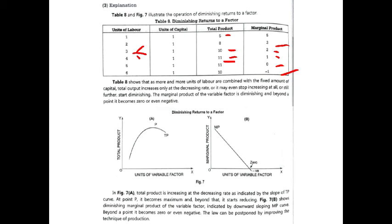That means when more and more units of labor are applied to a fixed factor, total product first increases at a diminishing rate, then becomes constant, and then starts to decline. In the diagram, total product first increases at a diminishing rate, then becomes constant at point P, and then starts to decrease.